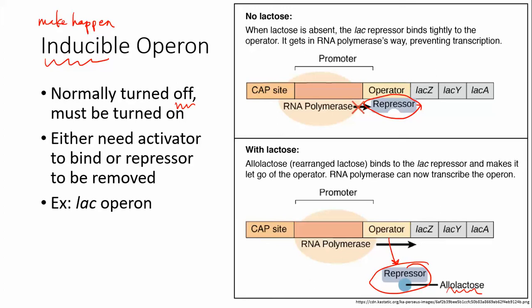However, there's always the possibility on the AP test that they'll throw some other operon at you, and if they tell you that it's inducible, you need to know it's normally turned off and it needs some sort of molecule that's going to either inactivate a repressor or activate an activator — something that's going to turn on expression of those genes.